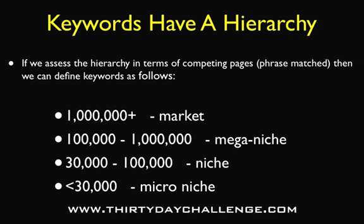So back to our keyword hierarchy in terms of competing pages. I define keywords with more than a million competing pages phrase matched as market keywords; between 100,000 and a million as mega niche keywords; between 30,000 and 100,000 competing pages phrase match as niche keywords; and less than 30,000 competing pages phrase match as micro niche keywords. Here in the 30 day challenge our focus is on finding micro niche keywords - preferably less than 30,000.